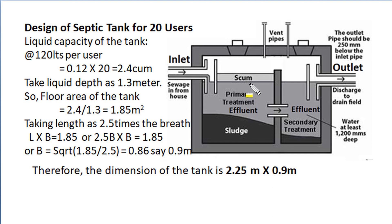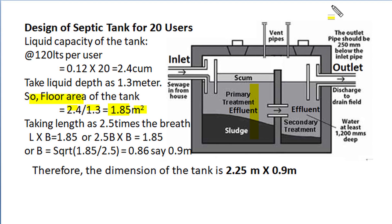Assuming a liquid depth of 1.3 metres, for a volume of 2.4 cubic metres, the floor area of the tank becomes volume divided by depth, which comes as 1.85 square metres. When the septic tank is designed, the length is considered as 2 to 4 times the breadth. If we consider length as 2.5 times the breadth, then length × breadth = 1.85, so 2.5 × breadth² = 1.85. This gives breadth² = 1.85 ÷ 2.5.